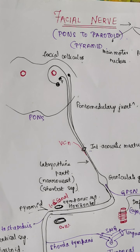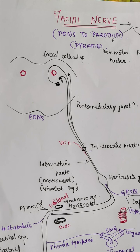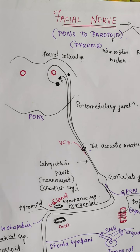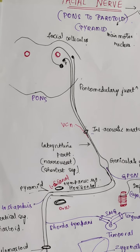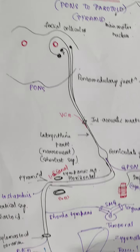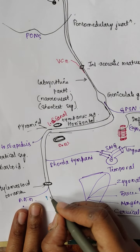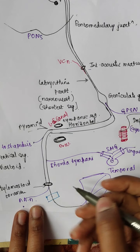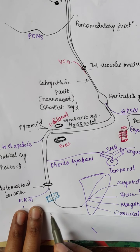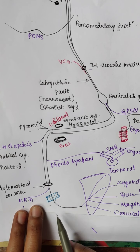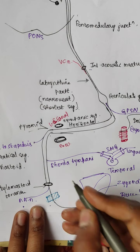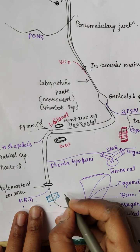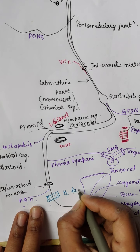Hi friends. Now that we have learned about the course of the facial nerve, let us know about the lesions that are associated with the facial nerve. Imagine there is a lesion occurring here — if the lesion is here, obviously these nerves cannot function and there is ipsilateral facial paralysis.